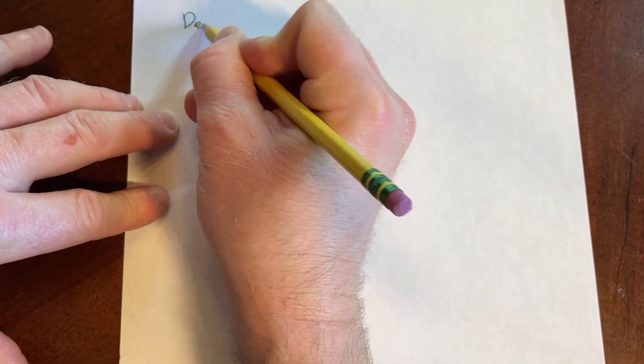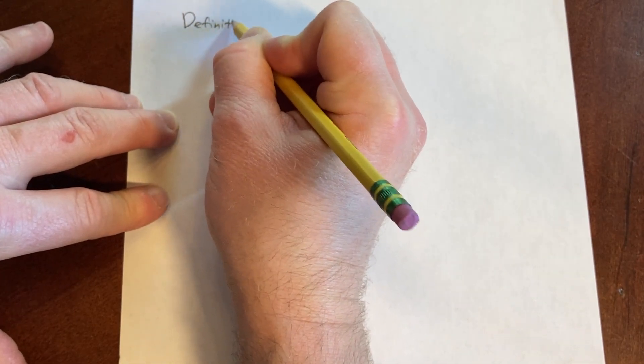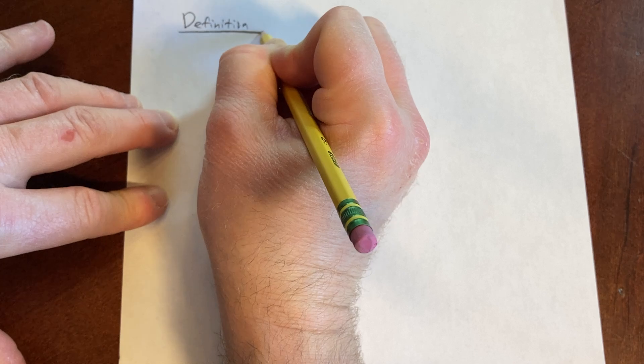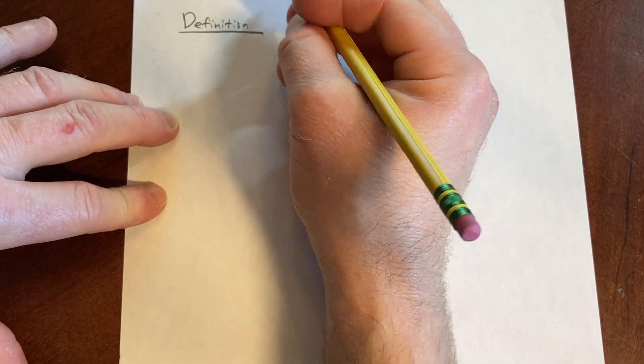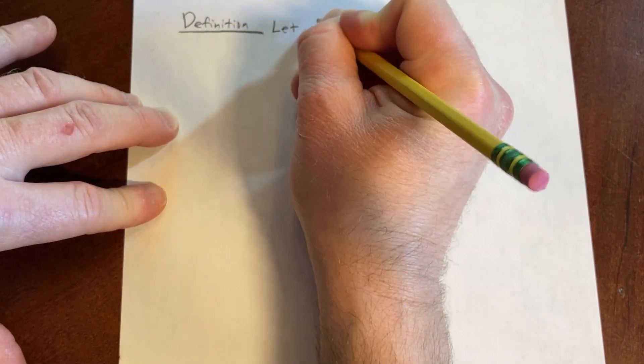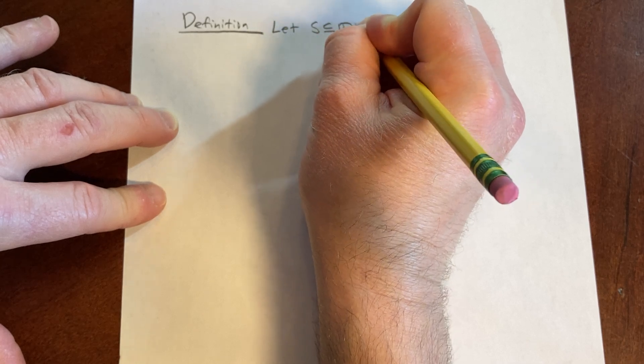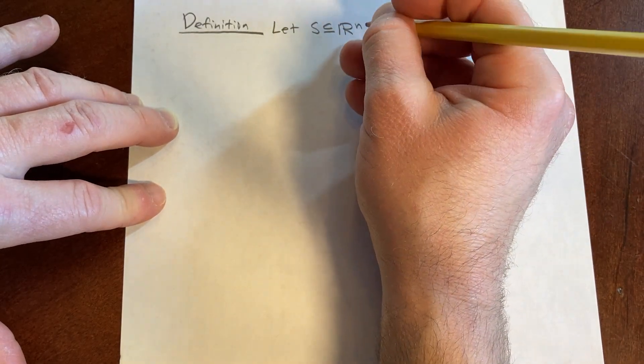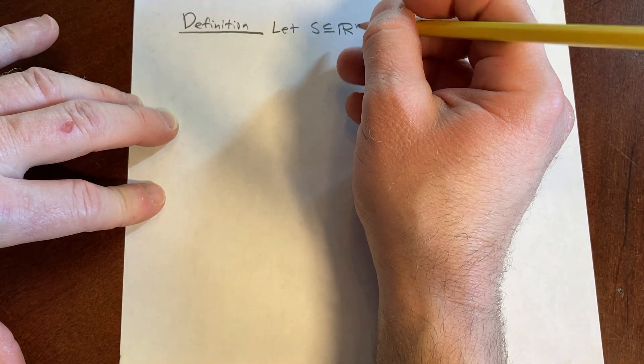So definition. This is really cool mathematics. Let S be a subset of Rn. We're going to start with that. So S is a subset of Rn.